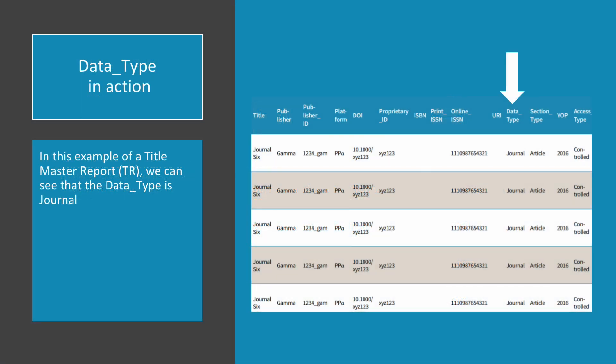In this example of a Title Master Report (TR), we can see that the Data Type is Journal.